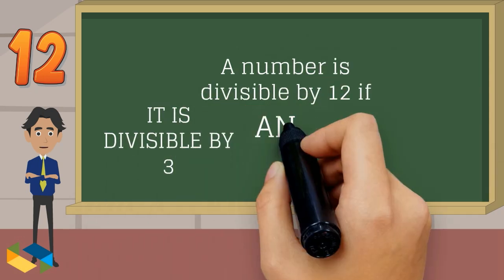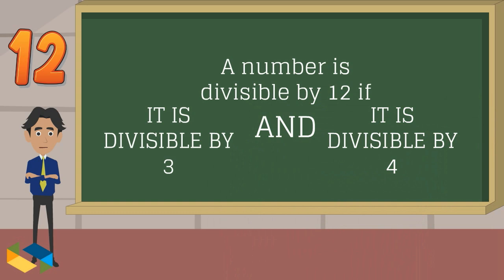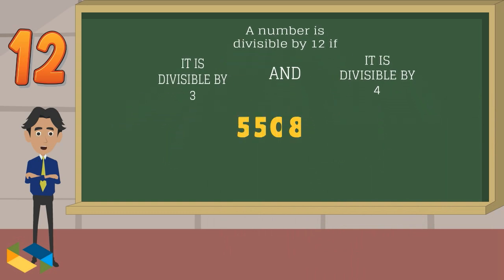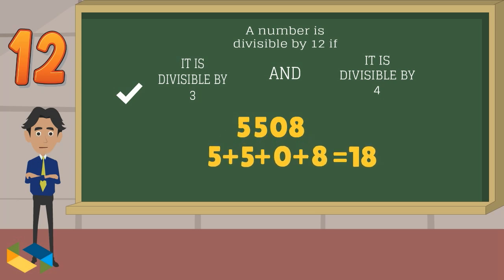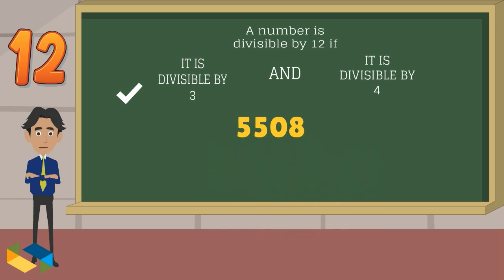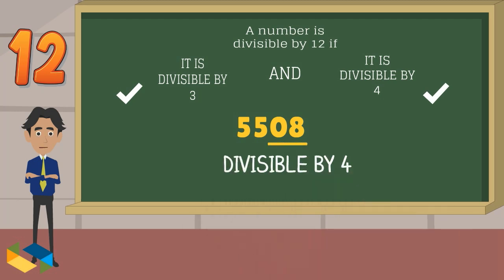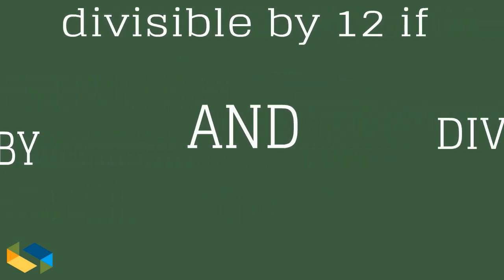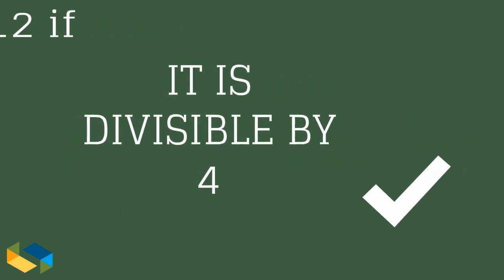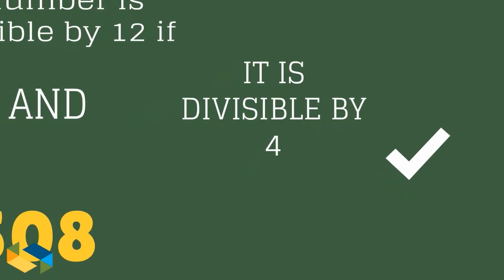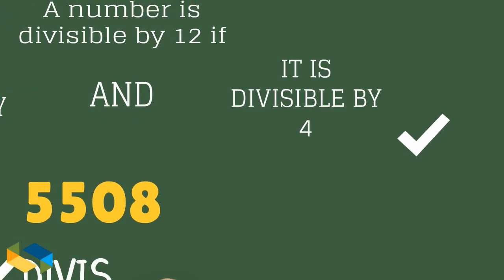The rule for 12 is simply a grouping of the rules for 3 and 4. For example, 5,508 is divisible by 3 because the sum of its digits is 18, and it is also divisible by 4 because its last two digits are divisible by 4. Since both rules for 3 and 4 are satisfied, 5,508 is also divisible by 12.